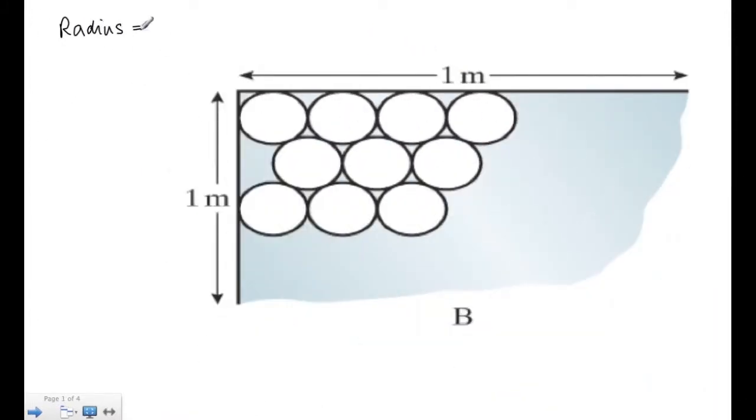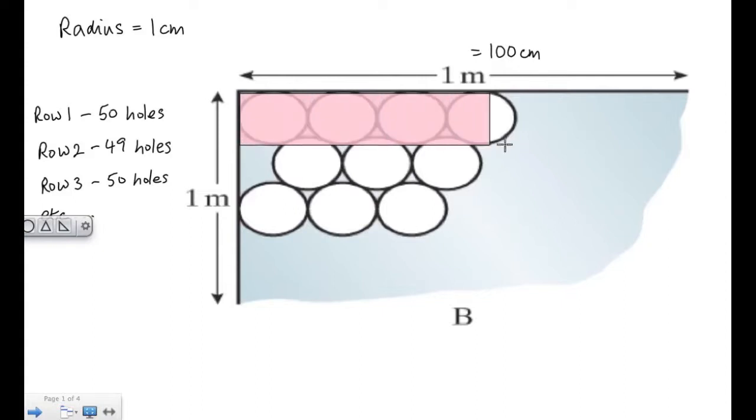Now consider method B. This is much more complicated. We still have a radius of one centimeter and it's 100 centimeters by 100 centimeters. If you consider row one, there would be 50 holes in this. Row two however has one less hole cut into it, so that's 49 holes. Row three is the same as the first row so that would also have 50 holes, and this pattern continues 50, 49, 50, 49, etc.